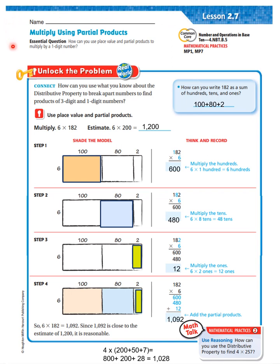Our essential question is, how can you use place value and partial products to multiply by a one-digit number? Well, it says connect. How can you use what you know about the distributive property to break apart numbers to find products of a three-digit and a one-digit number? We're going to use place value.